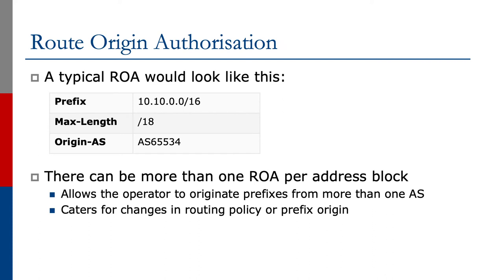A typical ROA would look something like as shown on the slide. It would contain the prefix, the max length, and the origin AS. The prefix is the address block or delegated address space that needs to be signed. The max length is the smallest subnet of that address prefix that is covered by the ROA. And the origin AS lists the autonomous system that is originating this prefix.